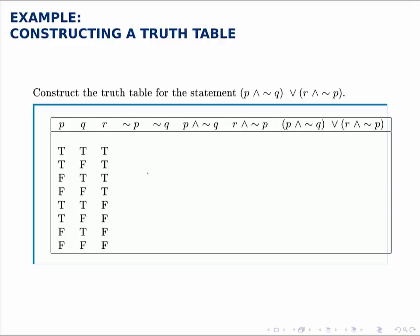The first column we'll fill in is not P. So all I do is look at the P column and reverse each of those truth values. So that would look like false, false, true, true, false, false, true, true. Just negating each of those truth values.